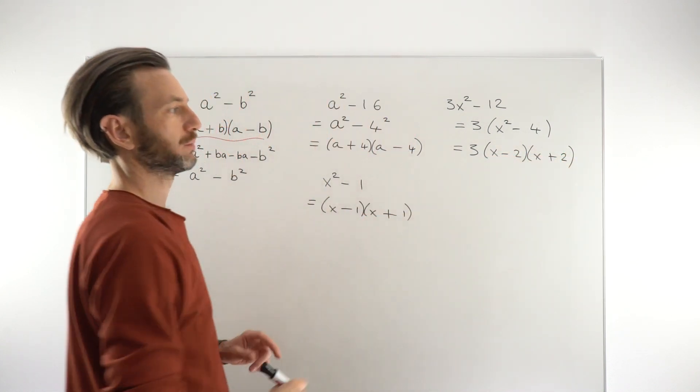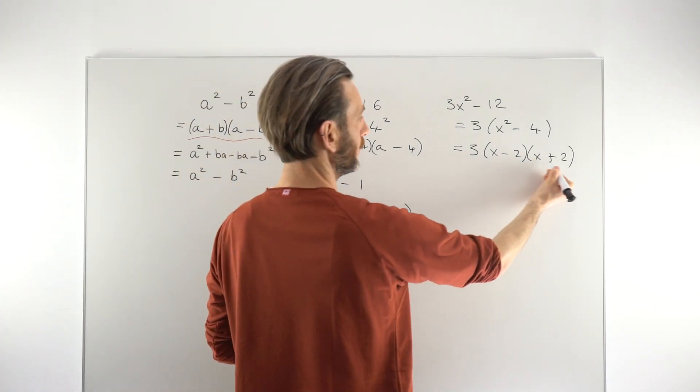We can see that that's x²-2². So we just go (x-2)(x+2), or the other way around, (x+2)(x-2), it doesn't matter. And that's that guy fully factorized.